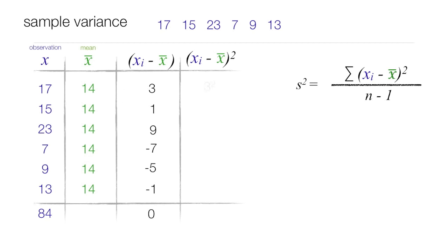Now my last column, I take the previous column and I square it. So 3 squared is 9, 1 squared is 1, 9 squared is 81. Negative 7 squared is 49. Doesn't matter if we use a negative sign or not, it's 49. Same with 5 squared is 25. Negative 1 squared is 1. I dropped the negative sign, but it's still always positive. Now I add up this column of information and it's 166.